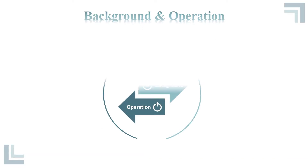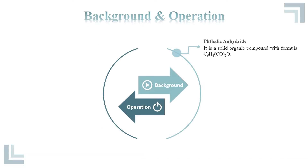Background and operation of the production of phallic anhydride. Phallic anhydride is a solid organic compound with the formula C6H4CO2O.